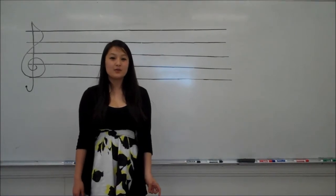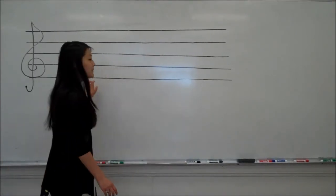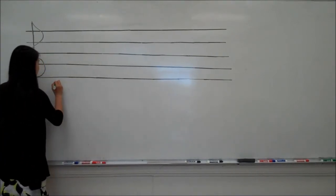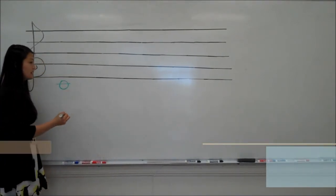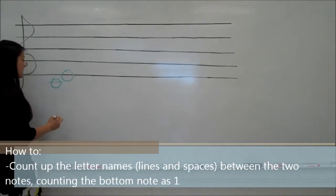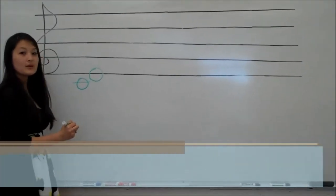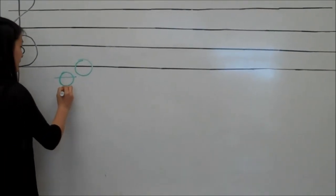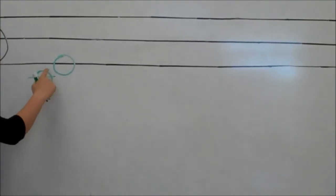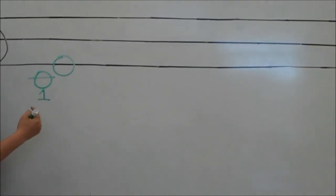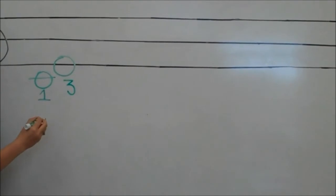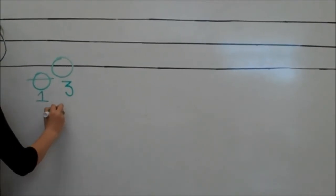To figure out what type of interval it is, you count up the spaces starting from the bottom note, which here is a C, to the next note, which here is an E. So, starting with the C, you count one, and then the next space would be D, so that would be two, and then your top note is three. Therefore, you have a third.